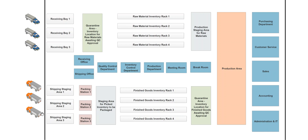Let's go ahead and break this down a little bit. At this proposed warehouse, we have three different receiving bays that are utilized for checking in raw materials into the warehouse. The goods are going to be brought off the truck and checked in to the computer systems.